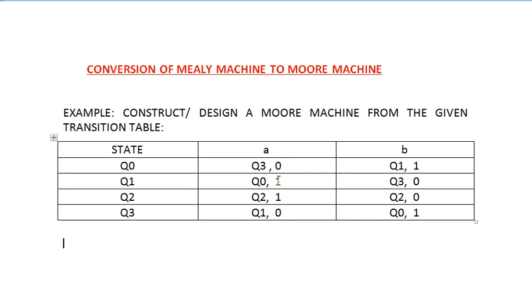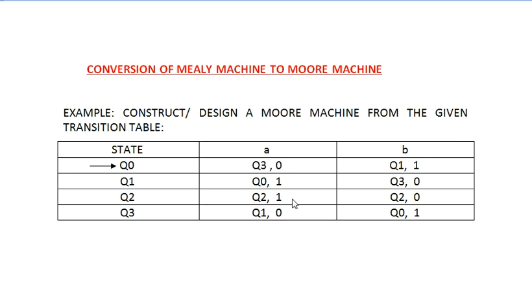Definitely from here we have to convert it into a Moore machine. Before starting, we have to look into which one is your initial state. Q0 has been considered as the initial state. The first step is to look into this table: for every input we are having a corresponding output as well, so this confirms it is your Mealy machine.